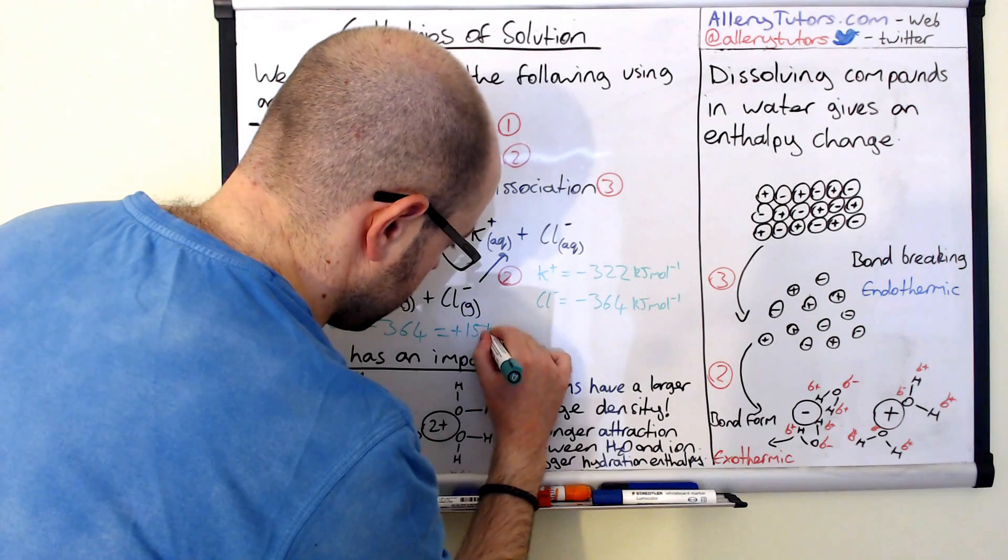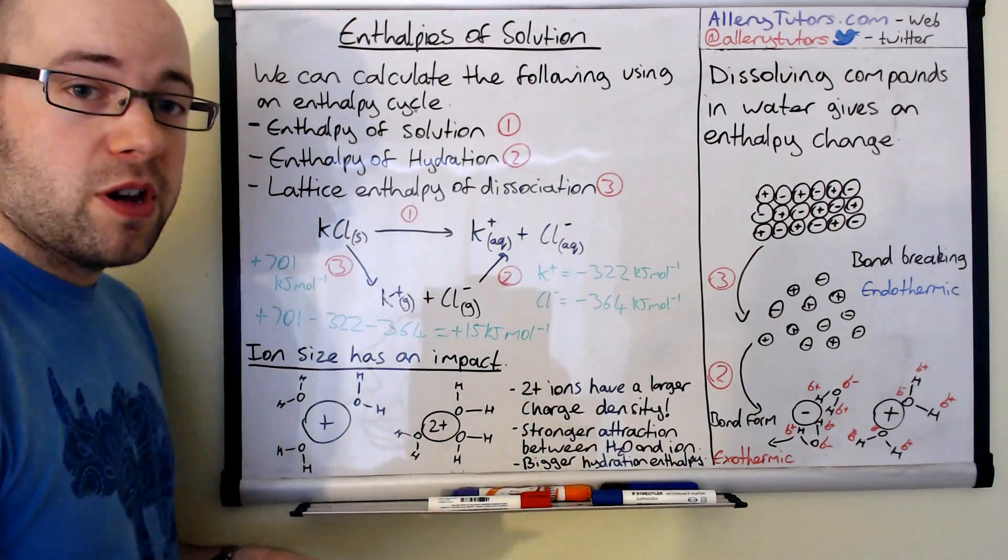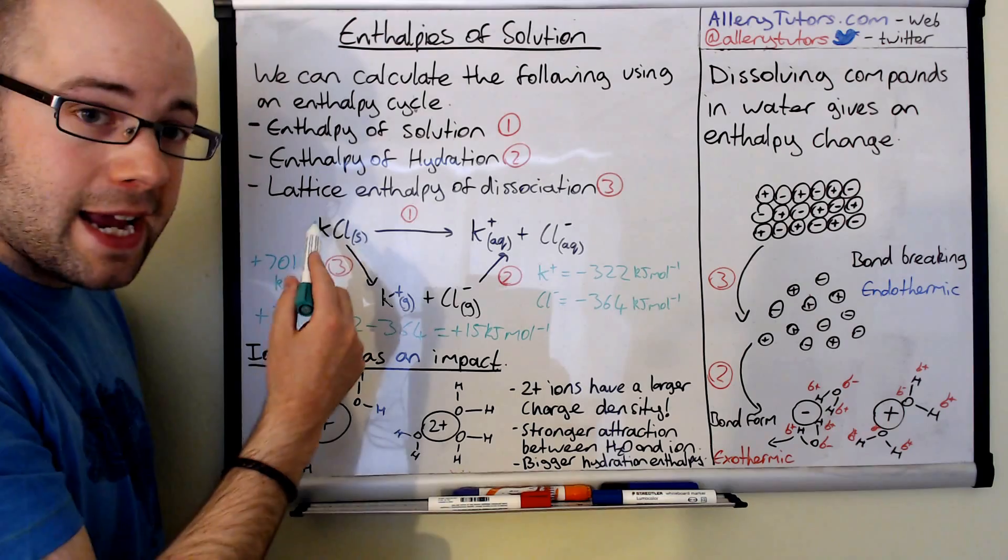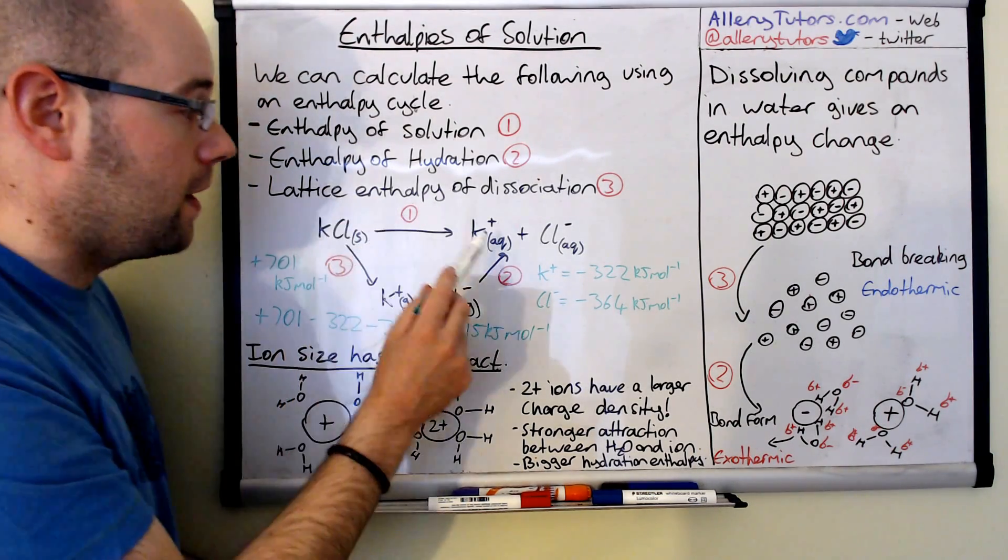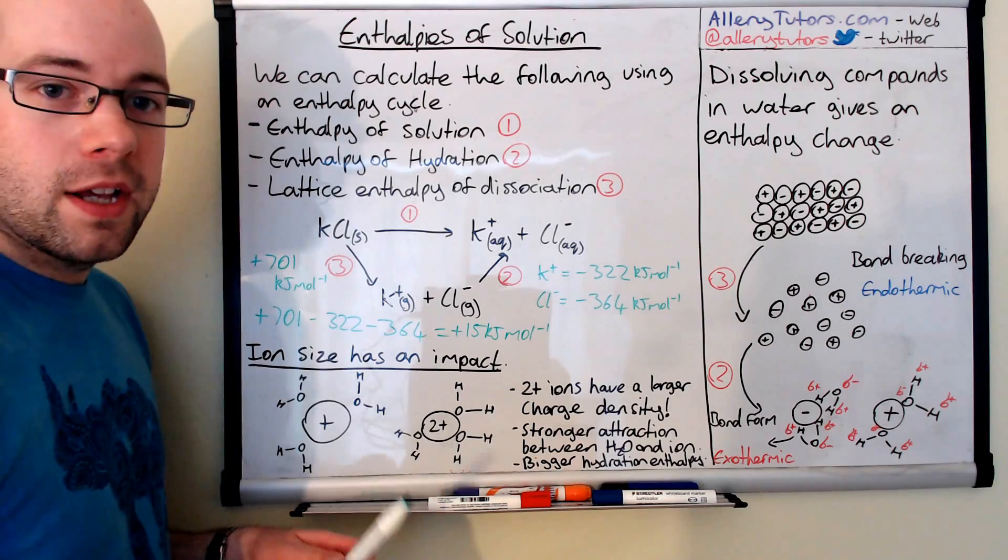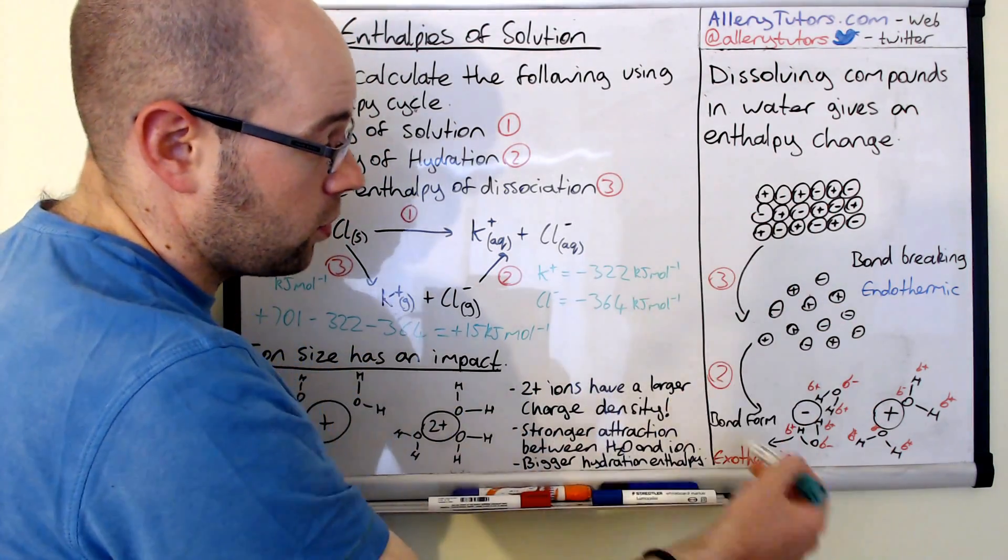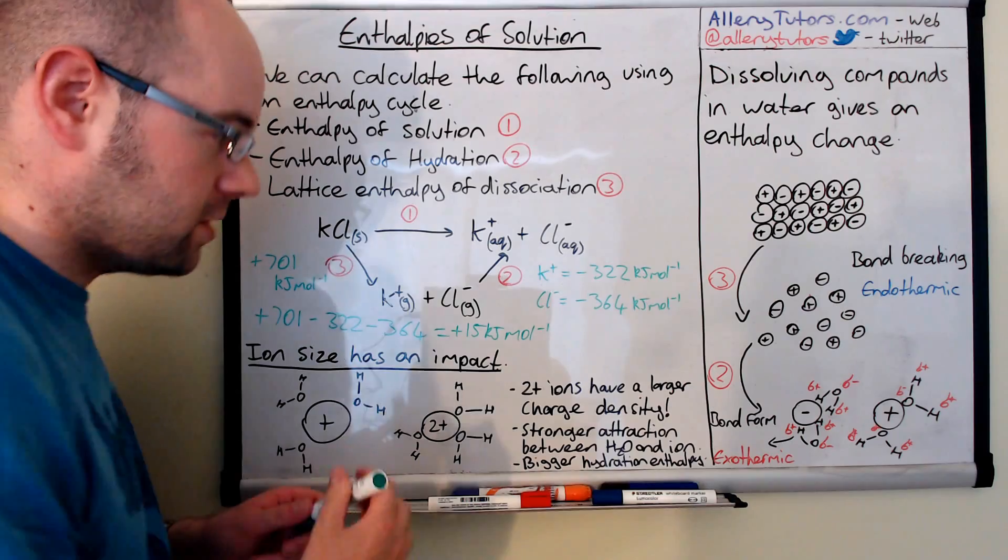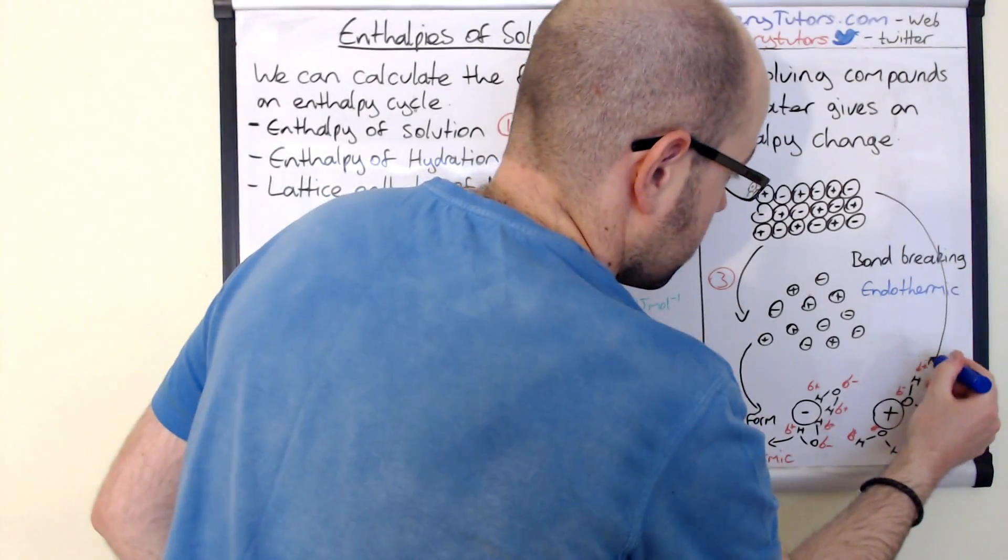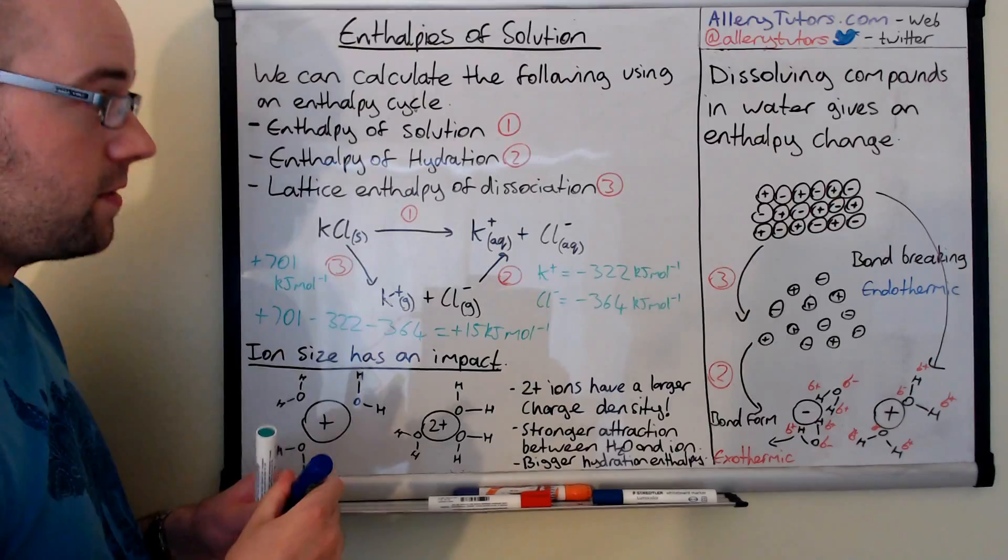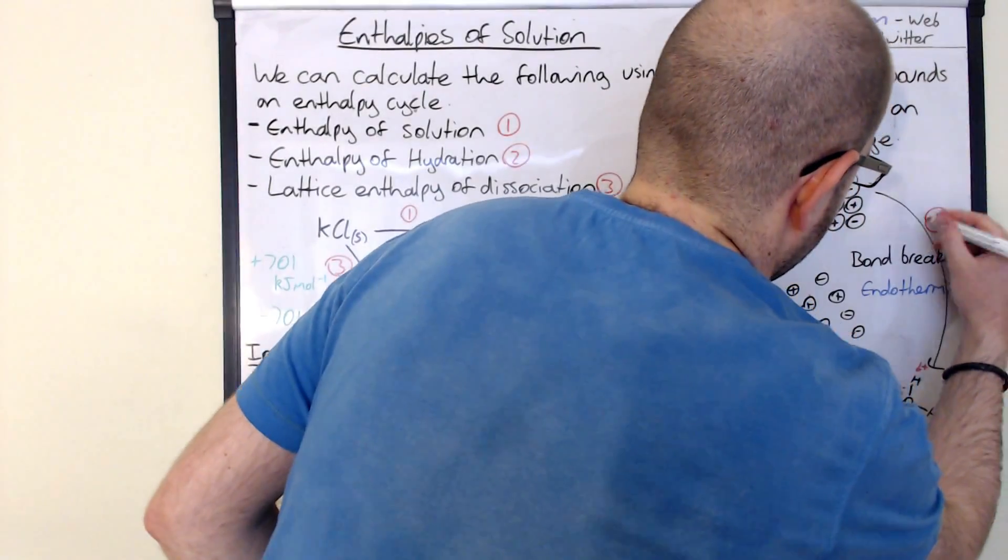So you can see that this overall process is endothermic. We need to put energy in to effectively turn the solid potassium chloride into aqueous ions. So the overall process endothermic and exothermic. The overall process which is the third one is effectively the enthalpy of solution, and so this is step one.